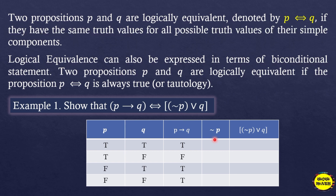Since we have the negation of p, when we negate a statement it's just the opposite. So if p is true, not p is false; if p is false, not p is true. The remaining two rows: false, false become true, true. Now let's get the truth values for 'not p or q'.